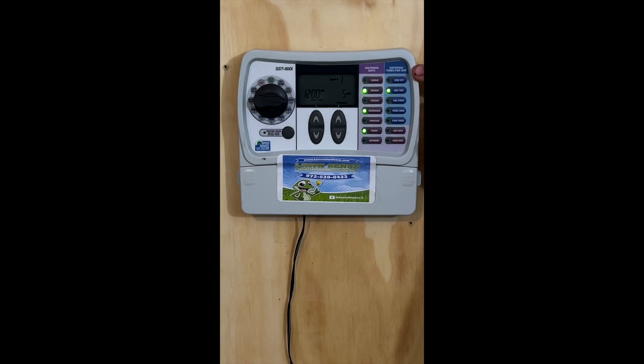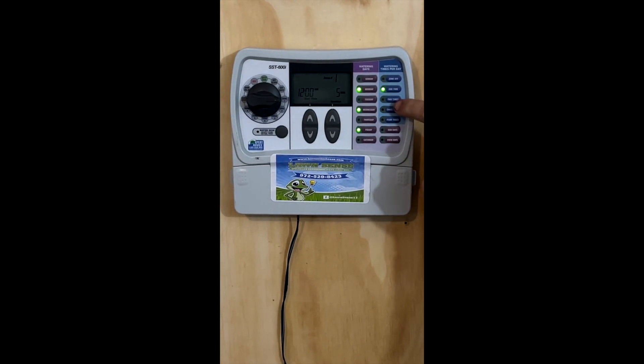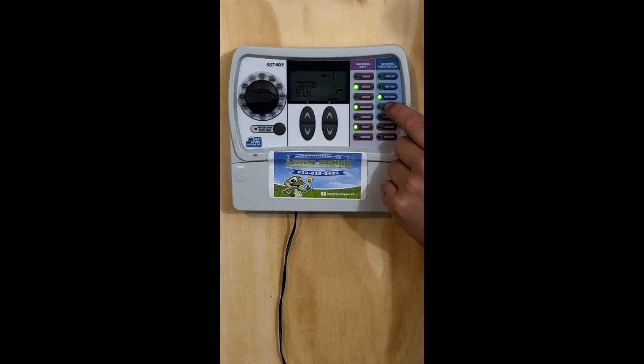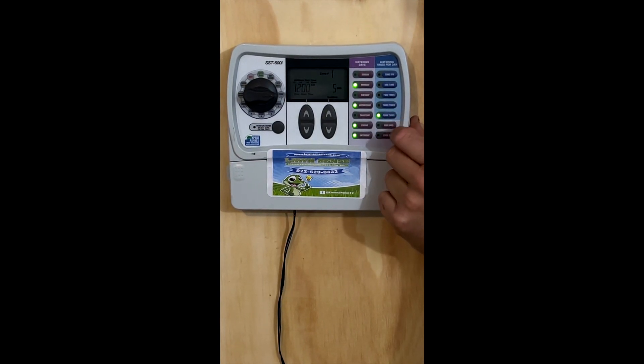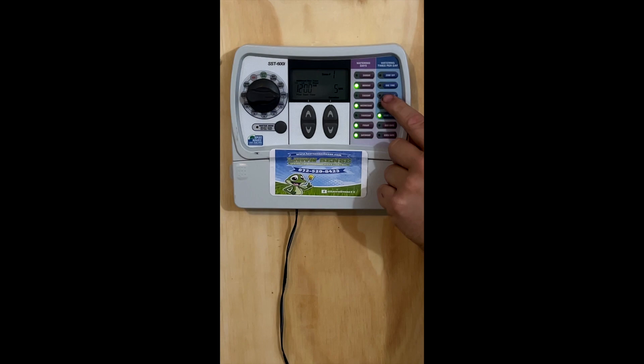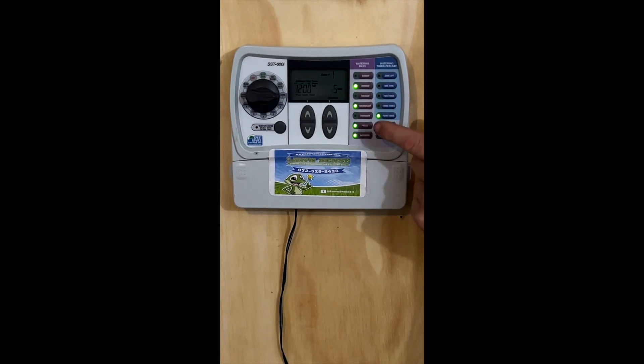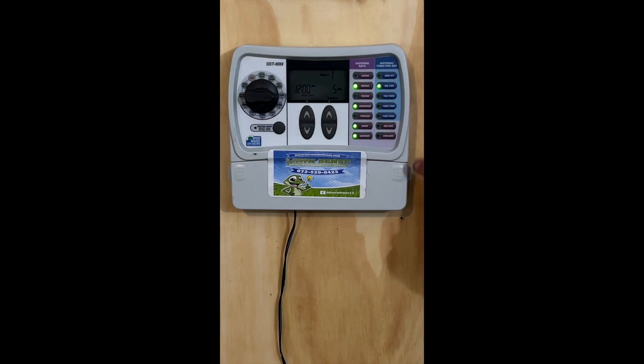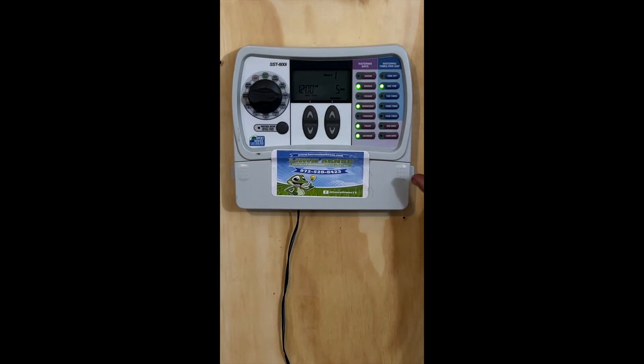Once we have this programmed the way we want, the next thing we're going to do is come over to how many times a day we want it to run. So this one's set for one time. We can go to two times, three times, four times. And then once you change the times, you can actually add days for each specific setup that you want. We're going to go back to one, or we can do odd and even days, which a lot of people like.